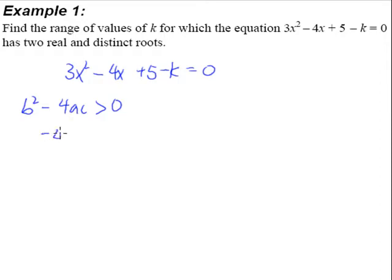Therefore, when we put in the coefficient b, which is the coefficient of x, is negative 4 squared minus 4a, which is the coefficient of x squared, and of course c, the constant. It will be greater than 0.